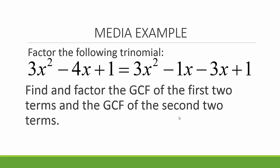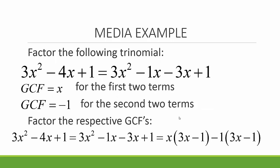Then we want to find the GCF of the first two terms and the GCF of the second two terms, also called factor by grouping. The GCF of the first two terms is x, and the GCF of the second two terms is negative 1. Factoring the respective GCFs, we have 3x squared minus 1x minus 3x plus 1, which equals x times 3x minus 1 minus 1 times 3x minus 1.